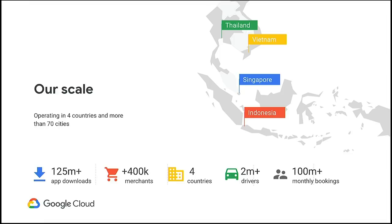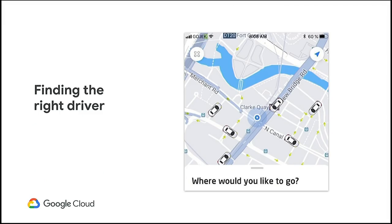One of the first challenges we faced at Gojek with machine learning was finding the right driver — a classic problem in ride hailing called dispatch or allocation. Which driver do you send to a customer when they want to make a booking? This is important because a system that makes this decision can have a very big impact on the bottom line of the company if you're looking at millions of orders every month.